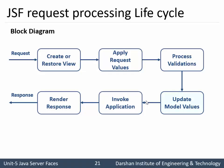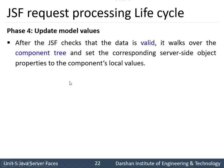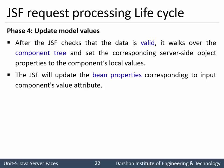Phase 4 is Update Model Value. This phase handles updating Java bean or managed bean values. After JSF checks that the data is valid, it walks over the component tree and sets the corresponding server-side object property to the component's local value. For example, if a user selected a radio button, that value needs to be updated to the managed bean or Java bean class using getter and setter methods. The JSF updates the bean properties corresponding to input component value attributes, so whatever component tree was created in Phase 2 gets its values updated to the managed bean class.